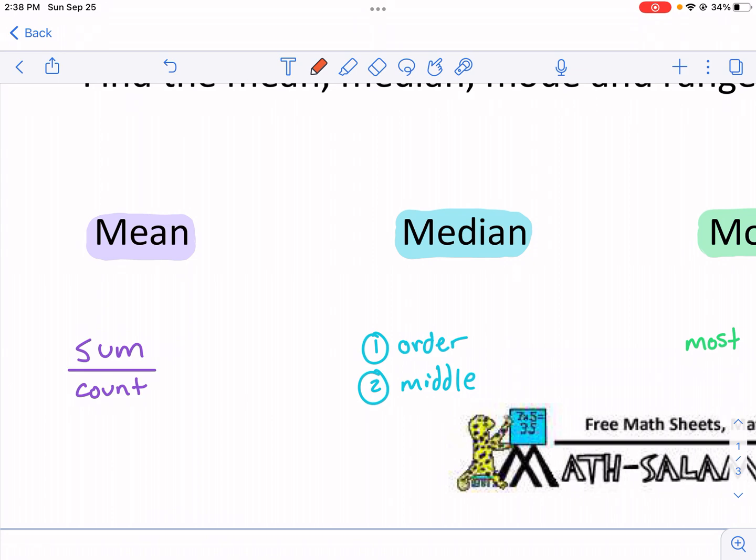But before we do, we have to understand what is Mean, Median, Mode, and Range before getting into these problems. So a quick summary, if you guys want to just pause this, write this down, take notes, whatever you want, or fast forward if you already know it. The mean is the sum divided by the count.